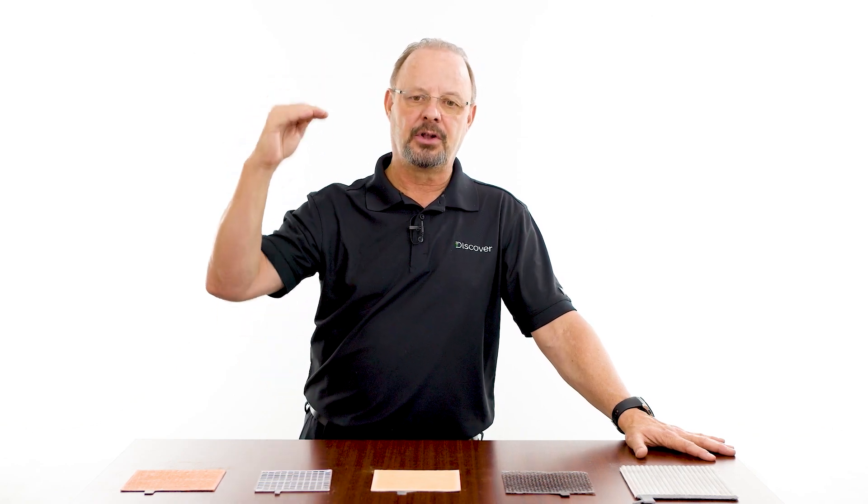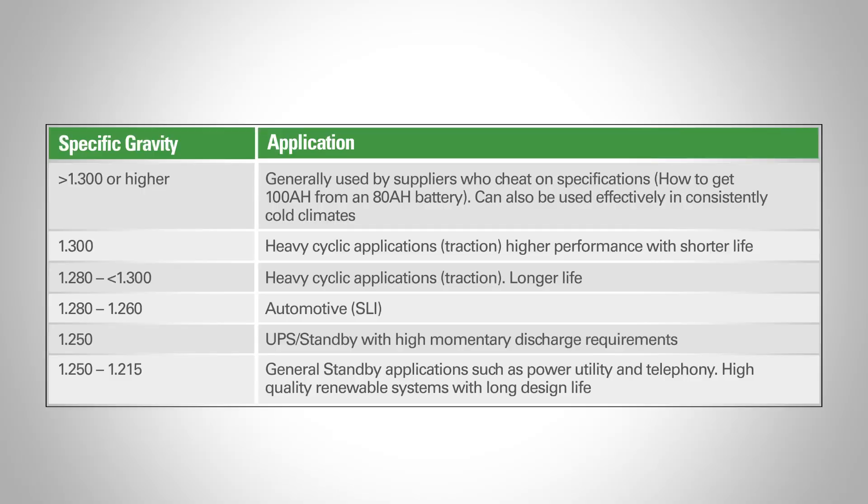If you use higher specific gravity, you can maintain that discharge for a longer period of time. But if you go too far, you'll over-discharge that battery and won't be able to discharge it very often. Suppliers using acid at 1330, 1350, or higher are essentially labeling a battery as 100 amp-hour when, more responsibly, a lower specific gravity should be used — producing a battery that lives longer but must be rated a little lower.